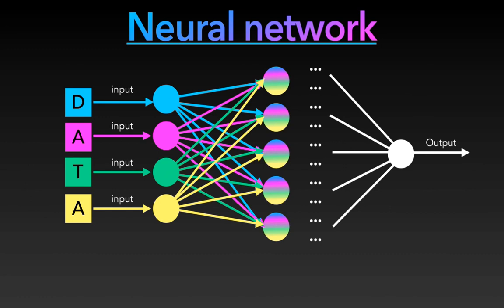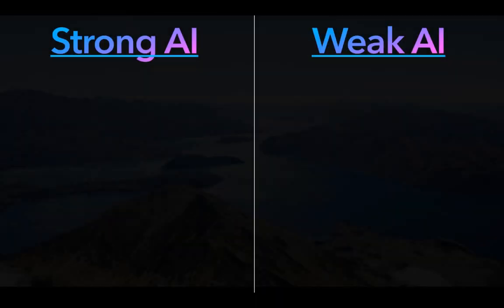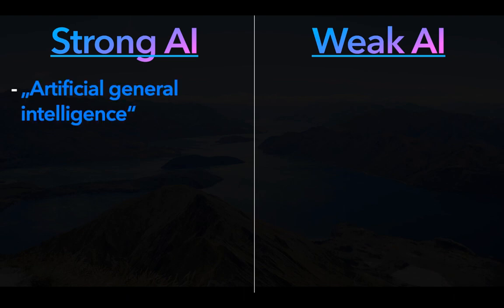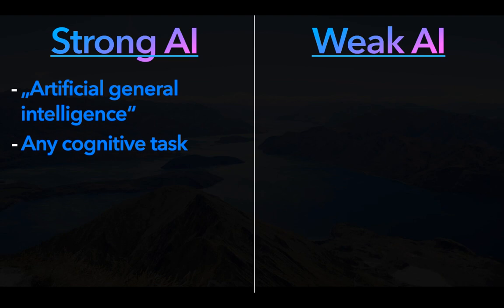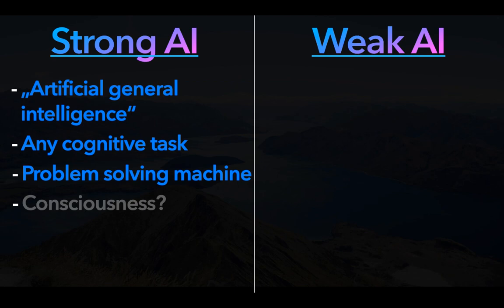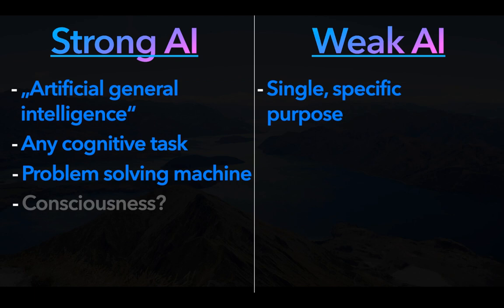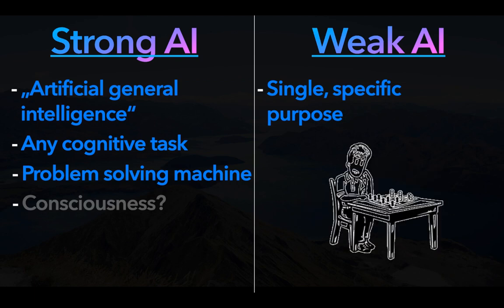We differentiate between two concepts of AI: so-called strong AI and weak AI. Strong AI is also called artificial general intelligence, and this term describes it extremely well. It is an AI that can successfully master any cognitive task that a human can solve — just faster and better, ideally. That means it's a general problem-solving machine that can be applied to any situation and any problem, and that maybe even has a real consciousness. Weak AI, on the contrary, is an AI made for a single, specific purpose and can only be used there — for example, driving a car, playing chess, or recognizing pictures of dogs.